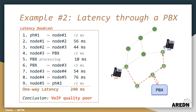But what would happen if we doubled the one-way latencies between the nodes along that route? We see that the total one-way latency is well over 150 milliseconds. These numbers alone tell us that we can probably expect VoIP call quality to be marginal or poor, with quite a bit of jitter and dropped audio.